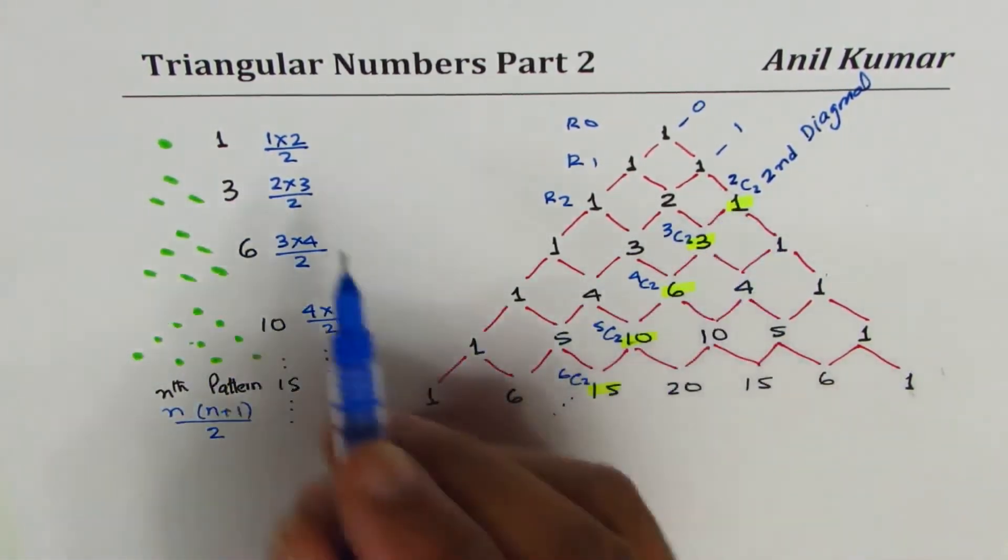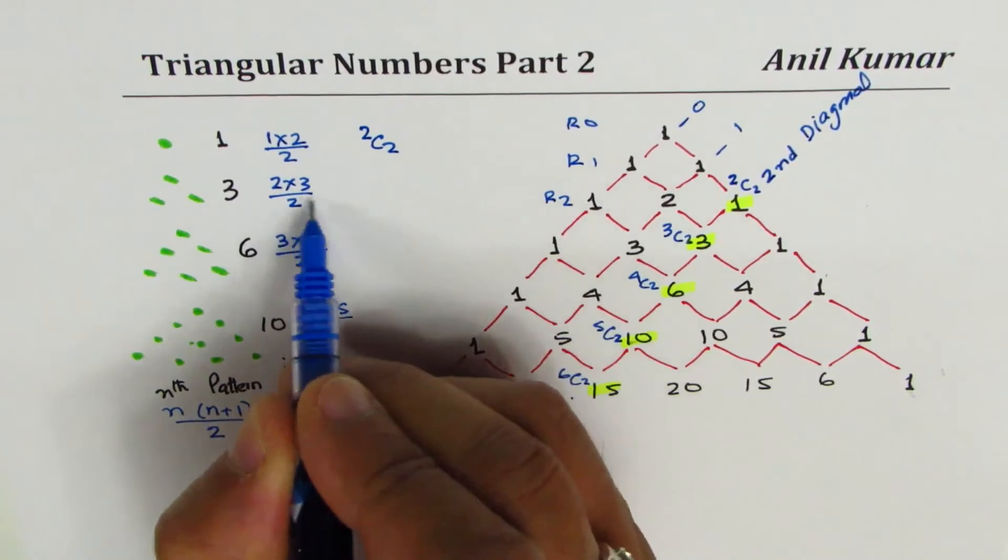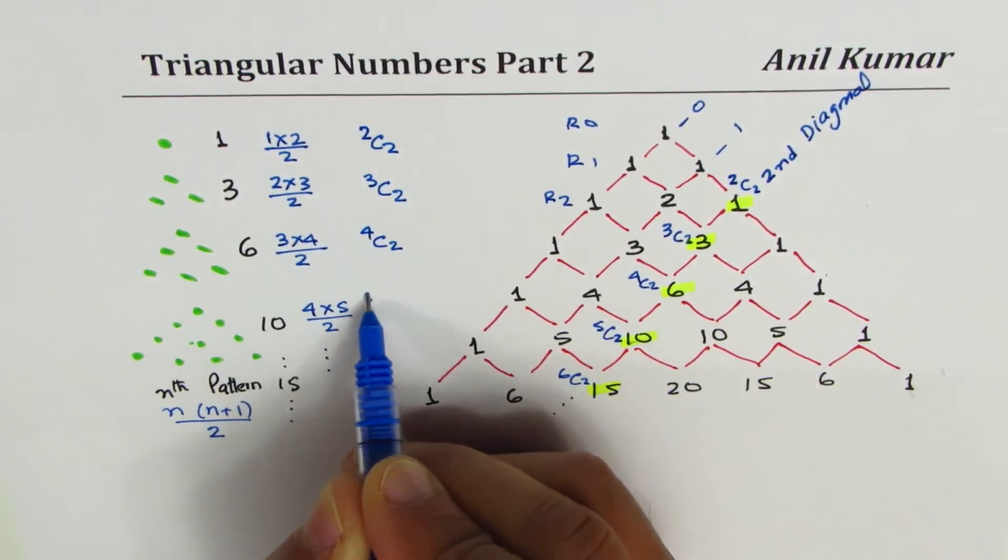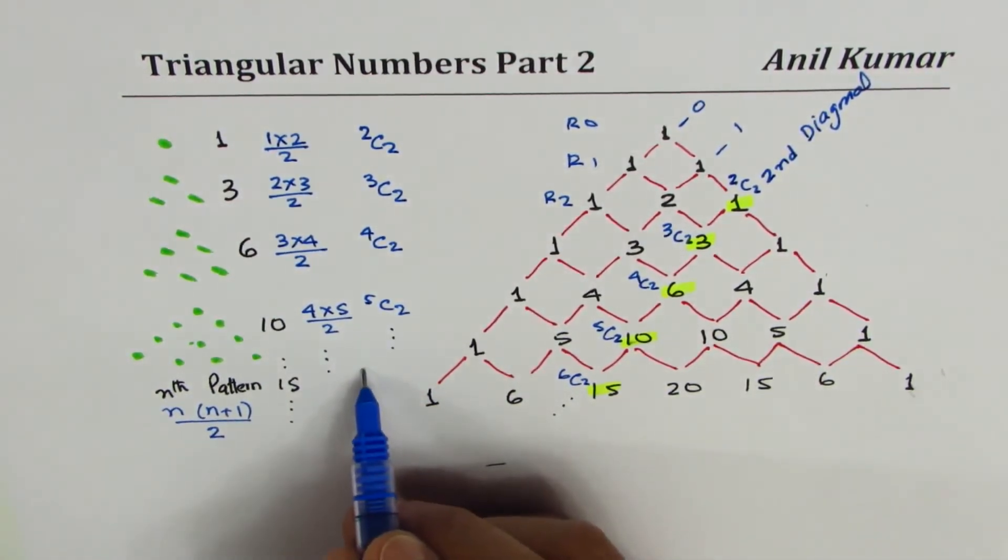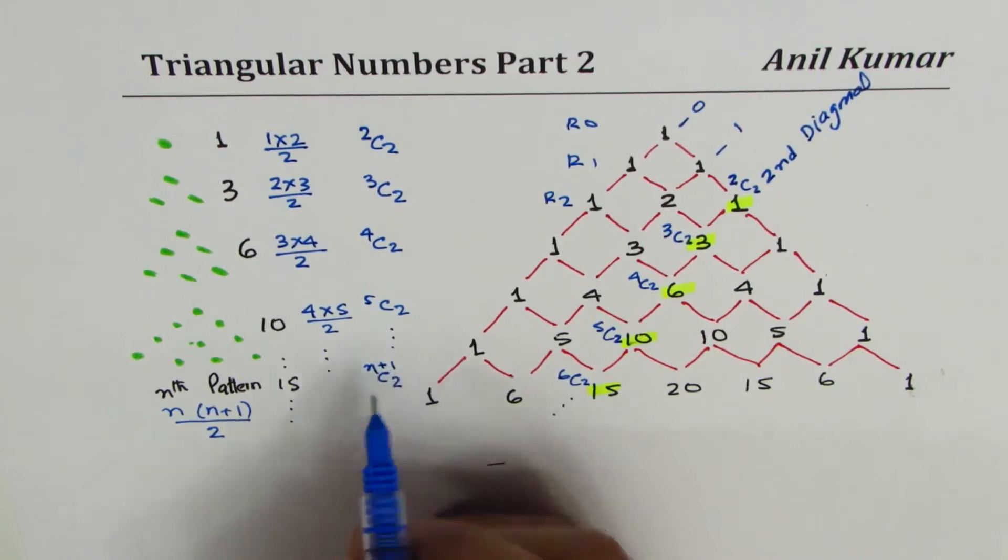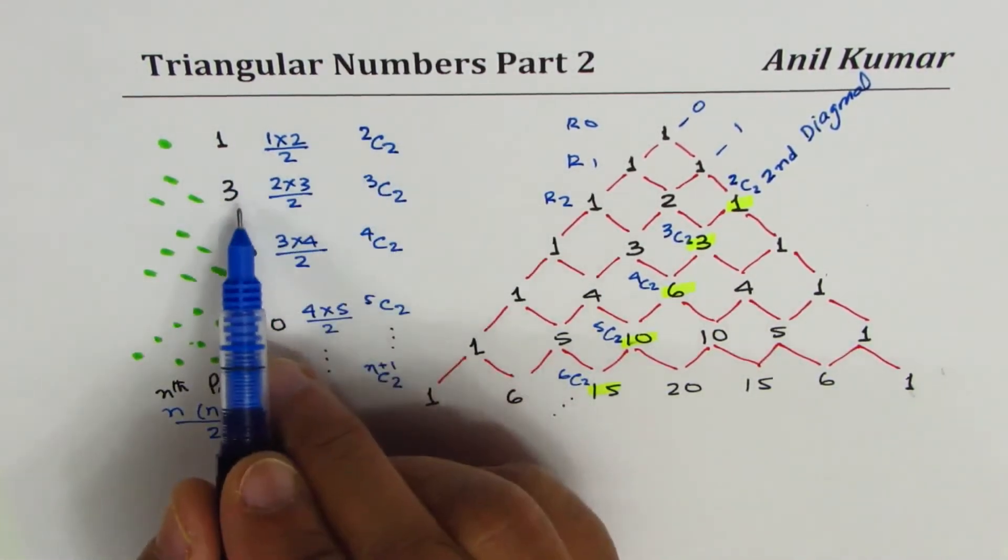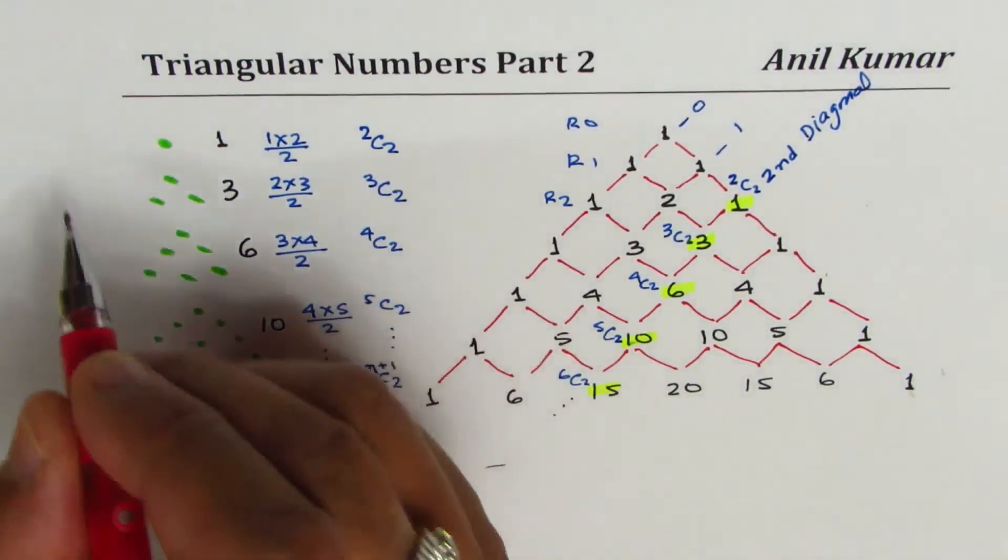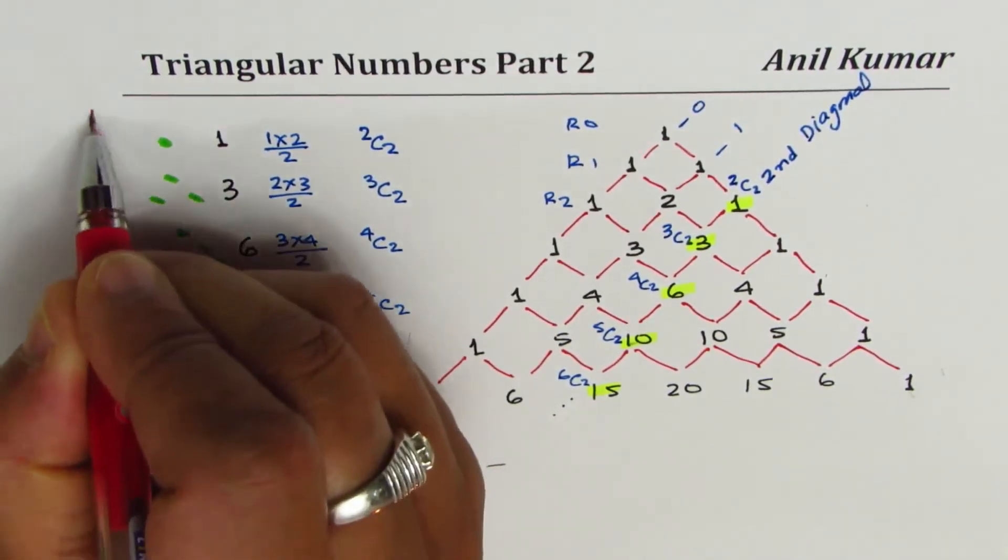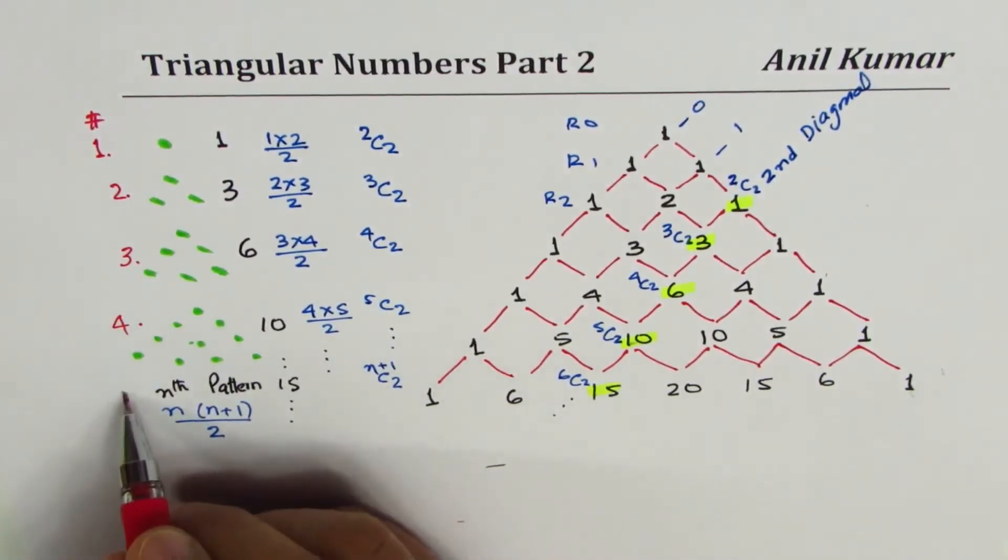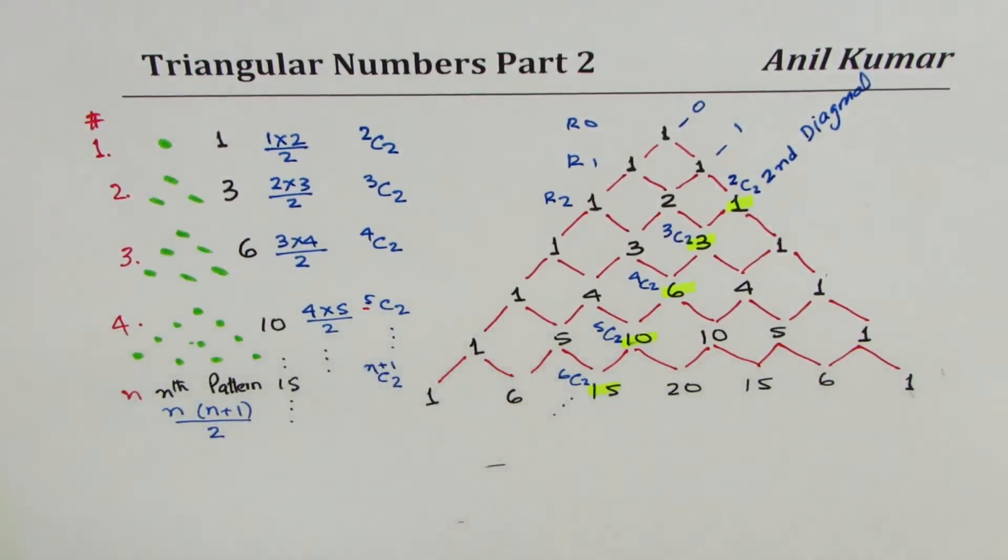What we see from here is that these numbers could be written as binomial coefficients. The first number in the series is 2C2, the next one is 3C2, then 4C2, 5C2 and so on. So the nth number will be n+1C2, because for the first it is 2C2, so one more. This is pattern 1, let me write pattern numbers so we have direct correlation. This is number 1, second, third, fourth, and then nth. So for 4 it is 5, one more, so n+1C2.